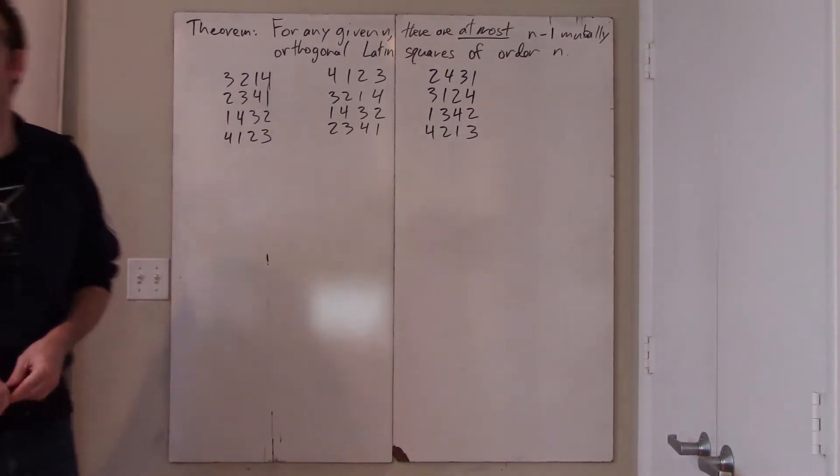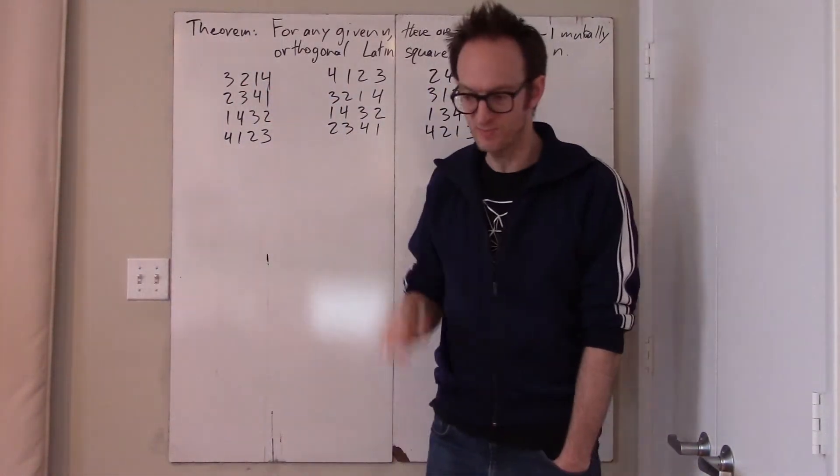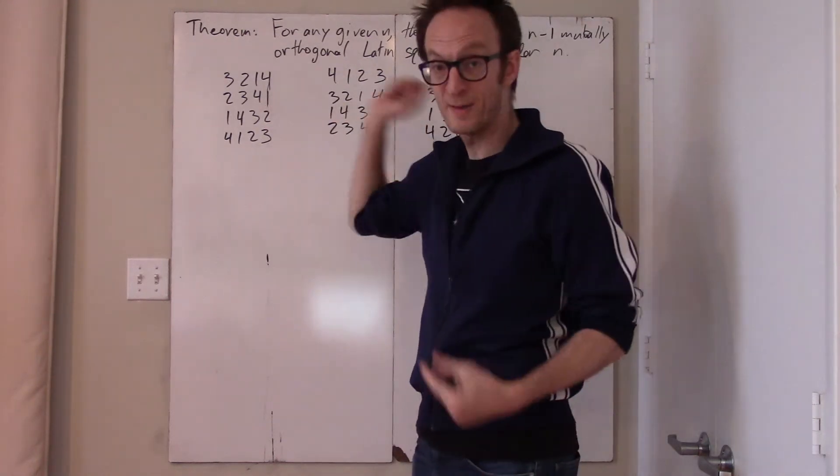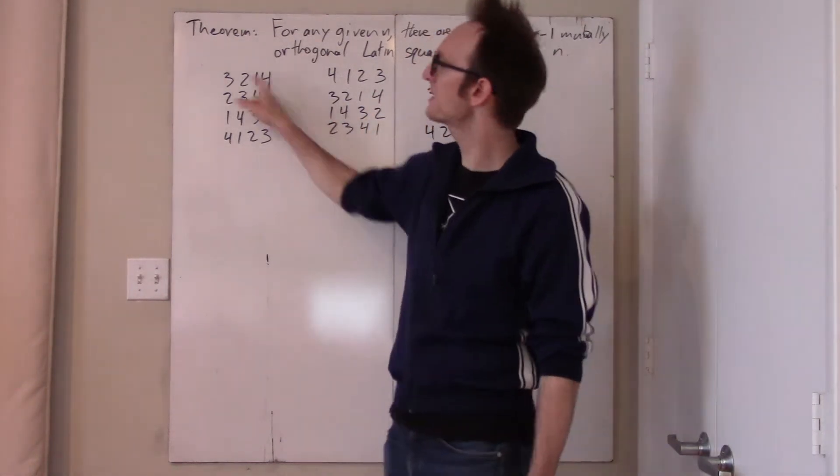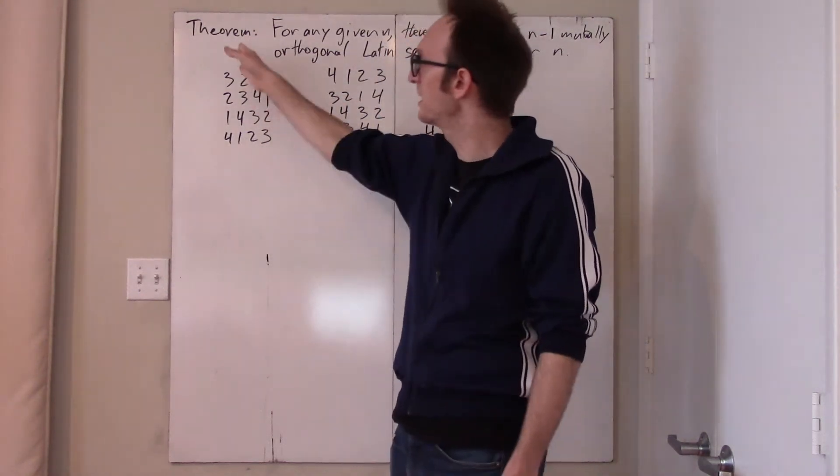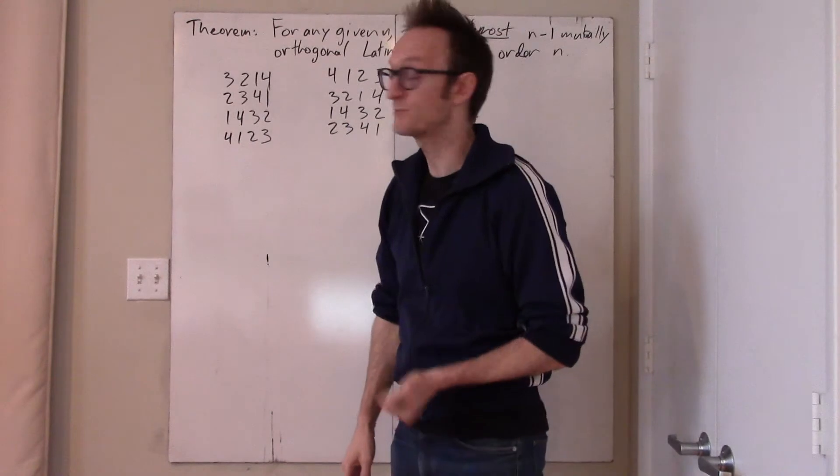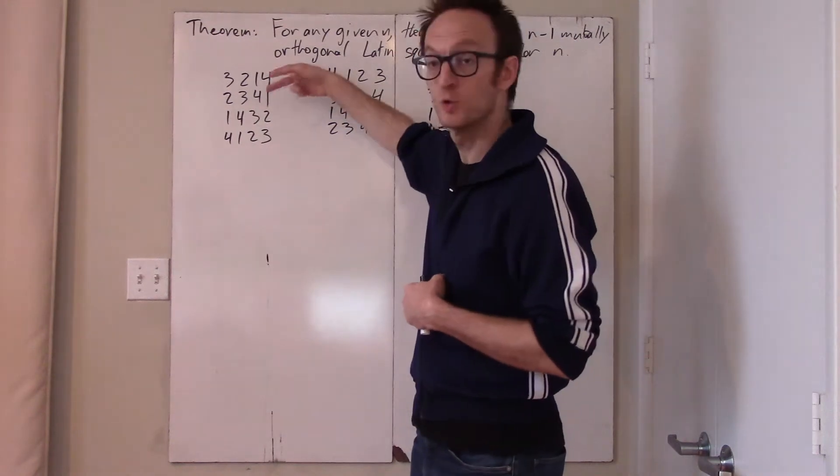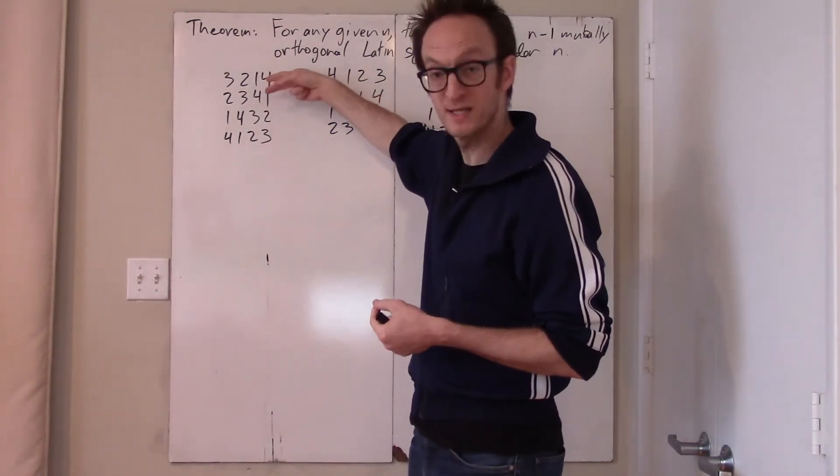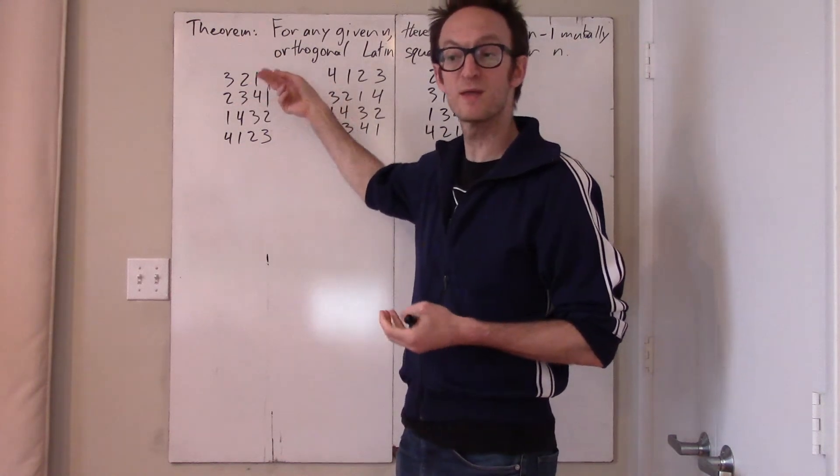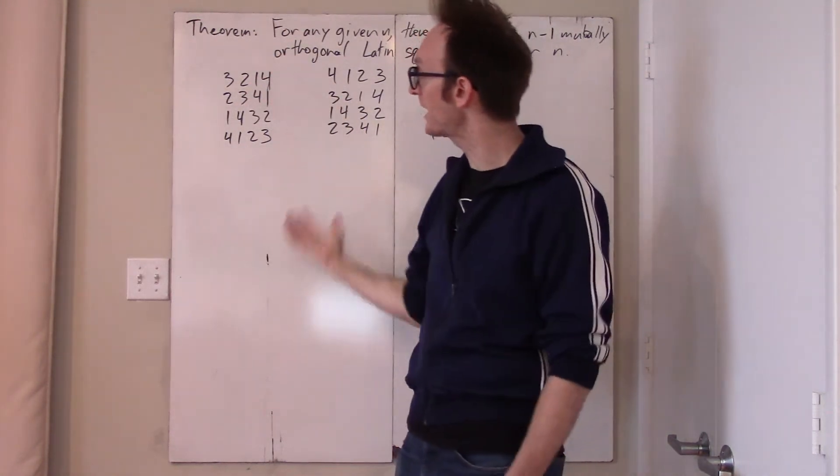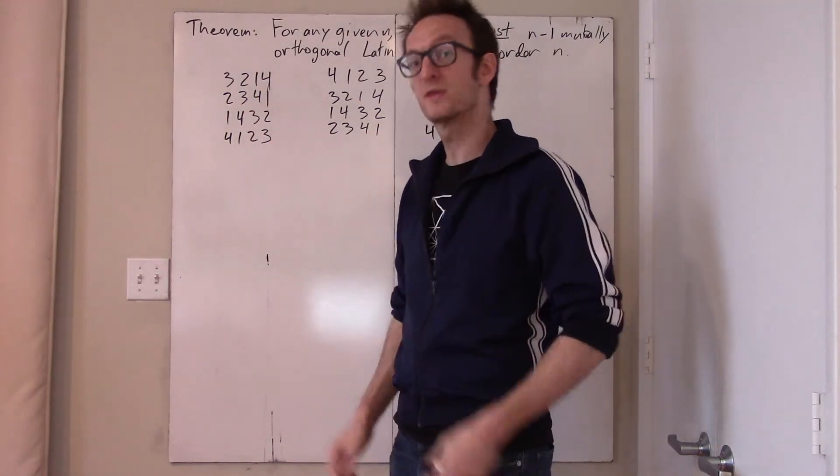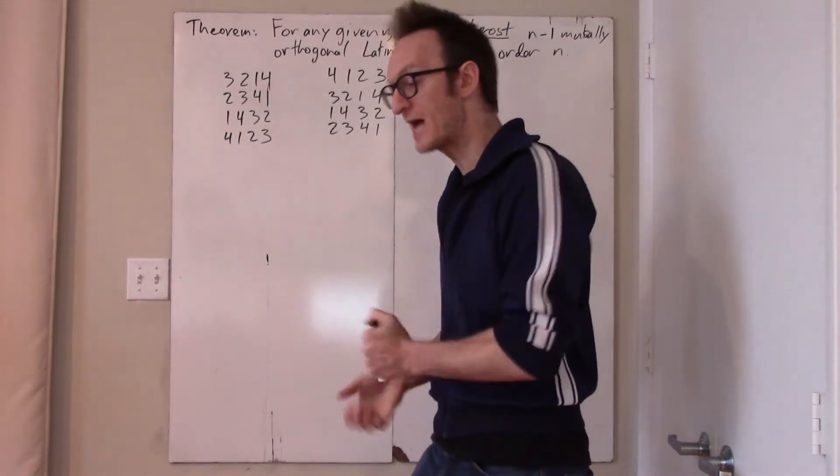Why? Well, what I started to say at the end of the previous video, but which was perhaps slightly wrong: take any Latin square. You can swap any two rows, and it will obviously continue to obey the row property and continue to obey the column property. So it's still a Latin square. And you can swap any columns, and it's exactly the same. But that does mess with the mutual orthogonality. So that's actually not what we want to do.